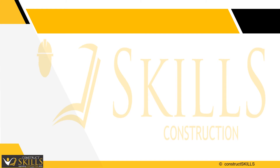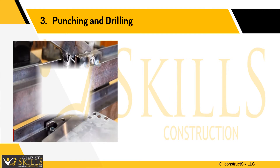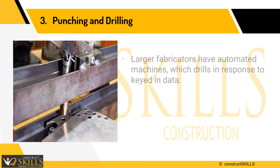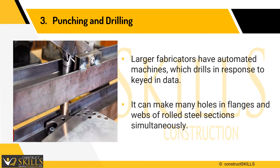After cutting and machining, the next step is punching and drilling, which involves making holes in the structural material. Large fabricators have installed NC — that is, numerically controlled — tooling. These machines drill holes in response to keyed-in data fed into them. They can make many holes required for joint bolts in flanges or webs of rolled steel sections simultaneously.